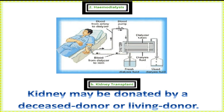A transplanted kidney from a donor has a life span of approximately 10 to 15 years. For example, if a person has received a kidney transplant, the donated kidney can function in the patient's urinary system for 10 to 15 years. This concludes our lecture on kidney disorders.